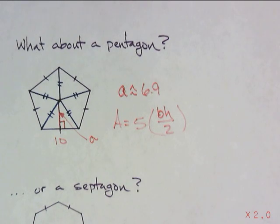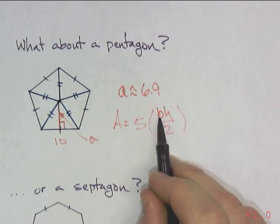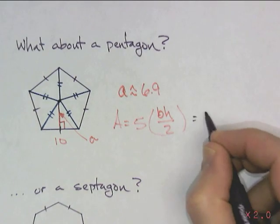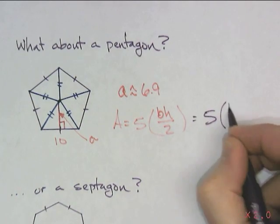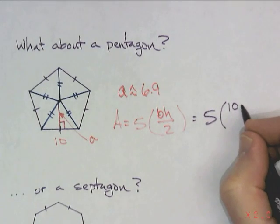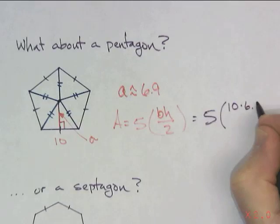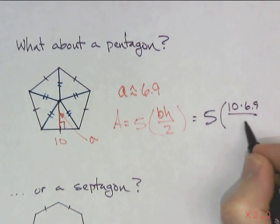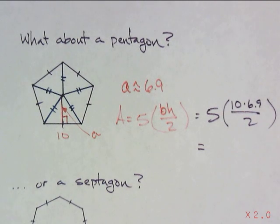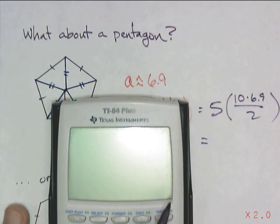Pretty straightforward. 5 times, what is the base? Base is going to be the side length. That's going to be 10. The height is the apothem. That's going to be your 6.9, and then divided by 2. And, in fact, if we multiply that out, that would give us the answer to that. I'll put in my calculator.